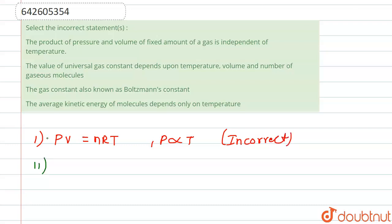Moving further for our statement 2, statement 2 is saying the value of universal gas constant depends upon temperature, volume, and number of gaseous molecules. So the gas constant is actually R, and it is independent of temperature and pressure.